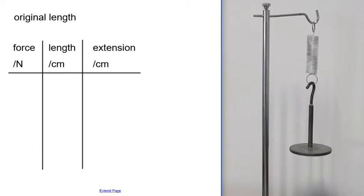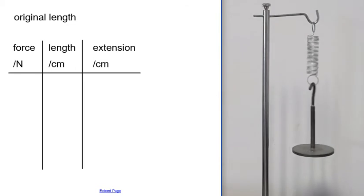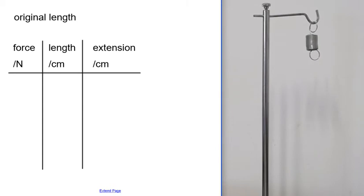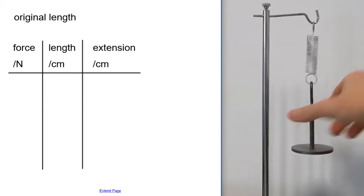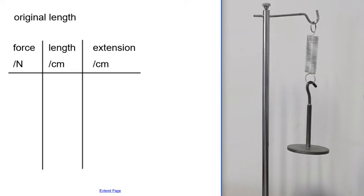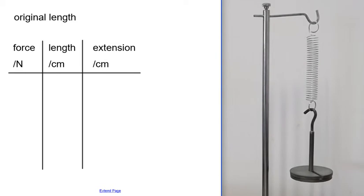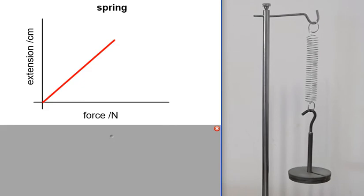Commonly you learn about Hook's Law within the context of springs. You can do an experiment where you measure the original length of the spring using a ruler, then hang some weights off it, apply a force, measure the length of the spring, and calculate the extension. As you add one weight the spring extends, add another weight and it extends more, and so on. You can then plot a graph of force and extension.